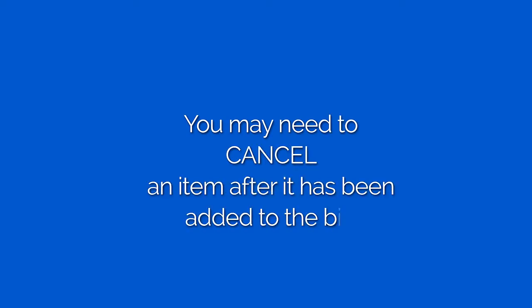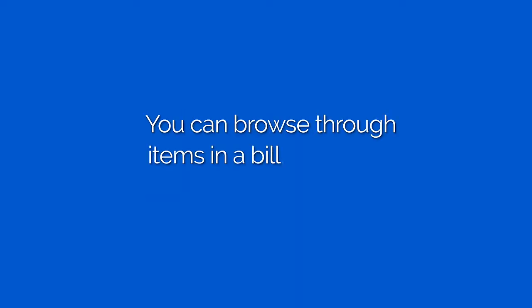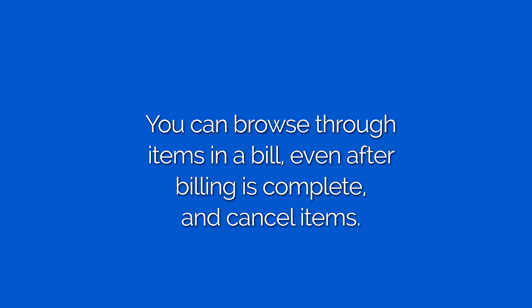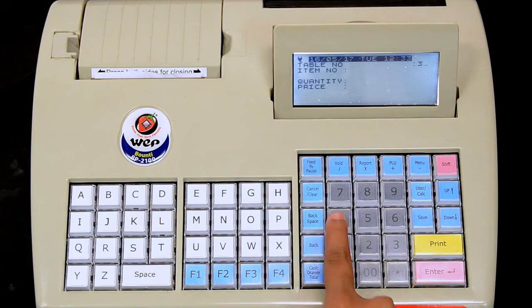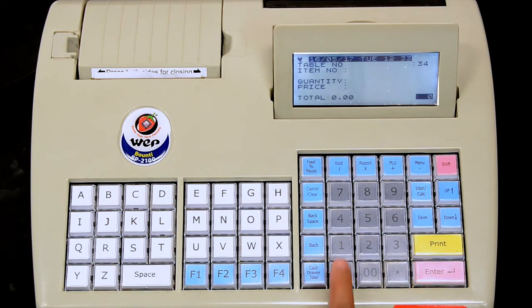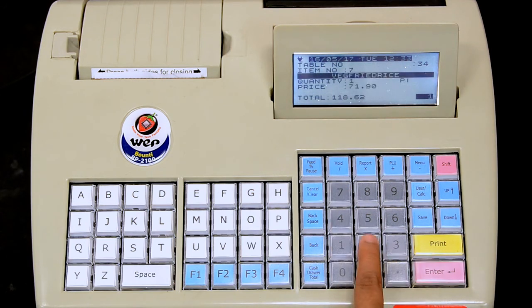Sometimes you may need to cancel an item after it has been billed, even after other items have been entered. This can be done by browsing through the items and cancelling the item. For our demonstration purposes, let us now create a bill by entering item codes and quantities one by one for each item.